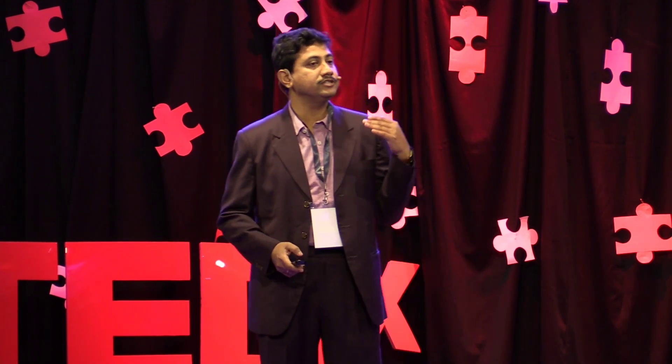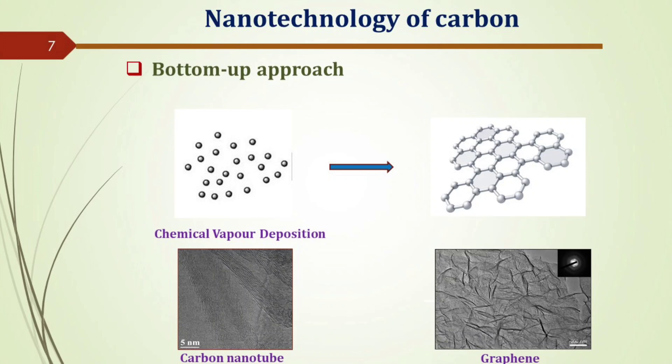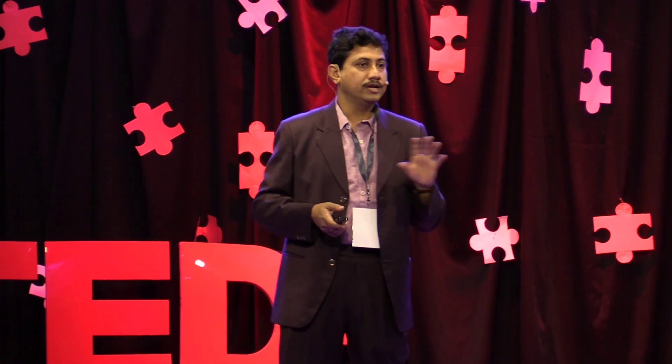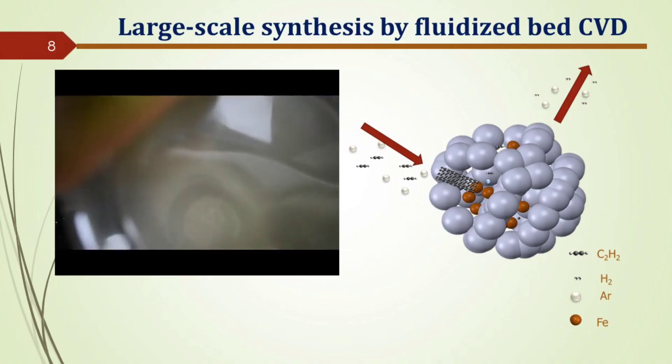The second approach is called the bottom-up approach. Here we start with molecules or atoms and try to arrange them in a particular fashion to end up with the same structure. This bottom-up approach is generally used in a process called chemical vapor deposition. We take some hydrocarbon gas and try to crack it. Hydrocarbon contains carbon and hydrogen, so we take the carbon atoms and arrange them to produce either carbon nanotubes or graphene, depending on the processing conditions.